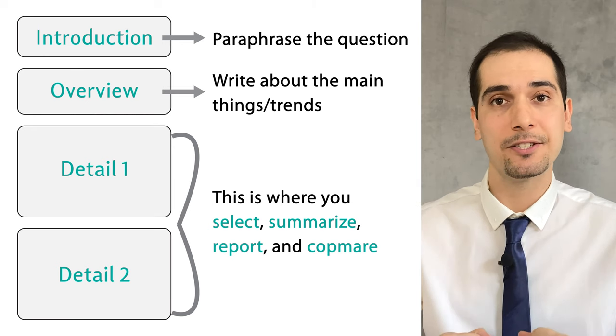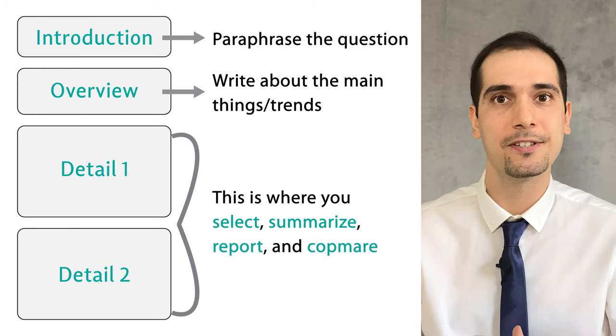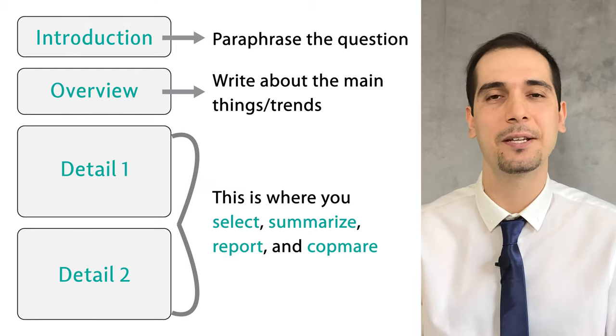In the detailed paragraphs you demonstrate to the examiner that you have fully understood and analyzed the chart — that you are capable of summarizing and selecting main features, making comparisons, and reporting. Why two detailed paragraphs? Imagine you are the reader: if there is a lot of data and numbers, wouldn't you be confused by one long paragraph? Two paragraphs with two separate ideas are much easier to follow. By organizing your ideas into two meaningful paragraphs, you achieve the coherence part of the band descriptor.